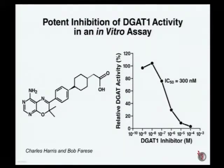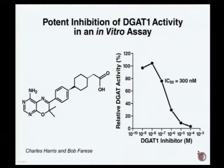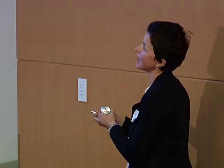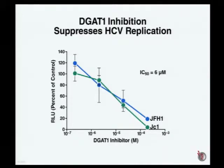When we had this result showing a unique involvement of DGAT-1, but not DGAT-2, in the viral life cycle, we turned to a colleague at the Gladstone Institute, Bob Ferris, who actually cloned the DGAT-1 and DGAT-2 enzymes. We obtained a specific DGAT-1 inhibitor from them that Charlie Harris and Bob's lab had well characterized in vitro. We used this inhibitor in the infectious cell culture and found that production of infectious virions was reduced in a dose-dependent manner, shown in two different clones — the GFH1 parental clone and the JC1 lab-adapted clone.